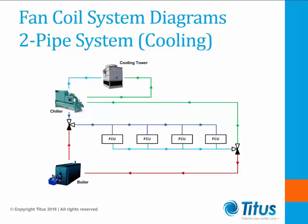A two-pipe system is used for either cooling only or heat only applications, but cannot be used for simultaneous cooling and heating. A two-pipe system consists of two insulated pipes, one for supply water to the conditioned space, and the other for return water. As the supply water flows through the fan coil, the required heat transfer between the water and the conditioned space takes place. A flow control valve controls the flow rate of hot or cold water to the fan coil, and is controlled by a zone thermostat. Depending on the season, either cold water or hot water can be isolated with simple changeover.